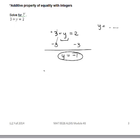So y equals negative 1, and we can check it. If I say 3 plus y, which is negative 1, does that equal 2? Sure enough, it does. 3 plus negative 1 is 2 equals 2, so my answer is correct.